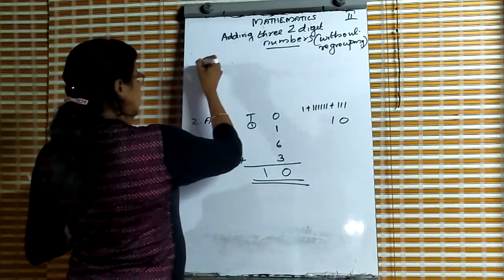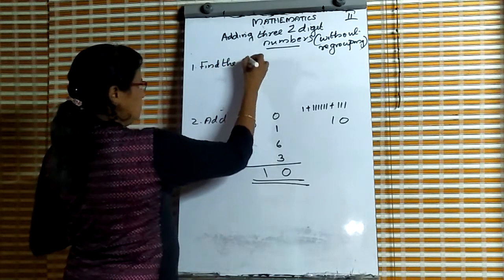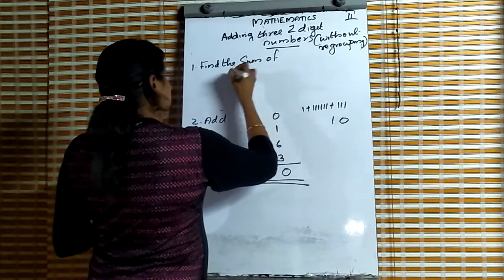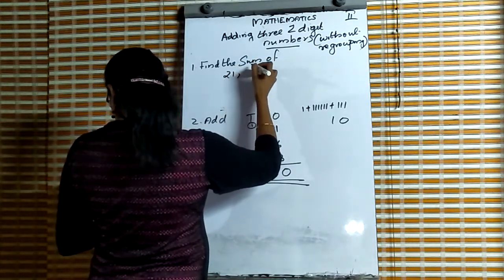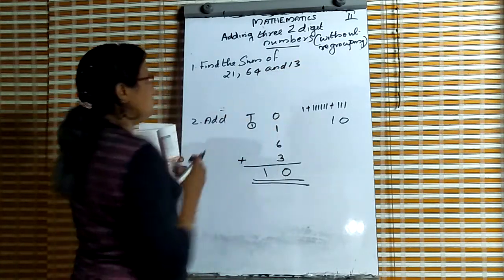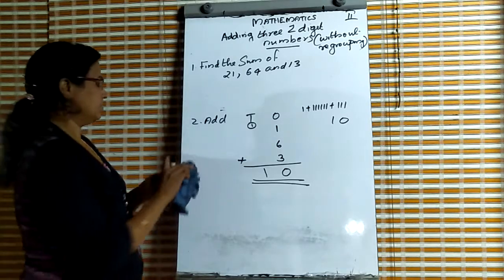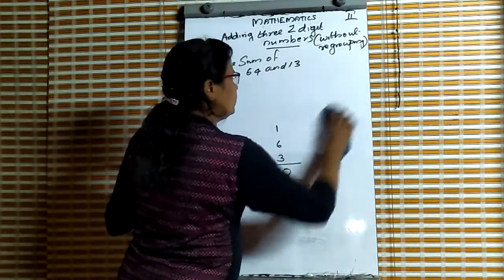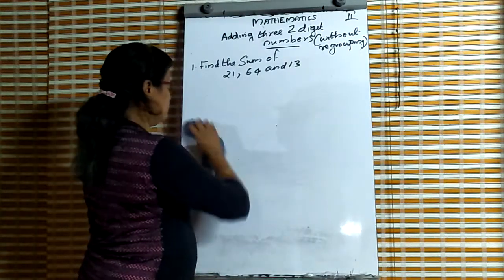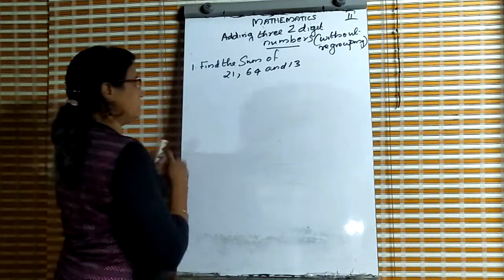First question: find the sum of 21, 64, and 13. These are three two-digit numbers. 21 is a two-digit number. 64 is a two-digit number. And 13 is also a two-digit number.